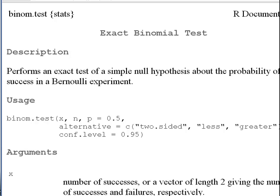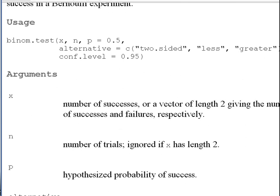So x is the number of successes. There are two ways of doing this actually. I'll do it both ways. You can input the number of successes or a vector of length 2 giving the number of successes or failures respectively. Number of trials is ignored if x is length 2. So there are two ways of conveying the same information.